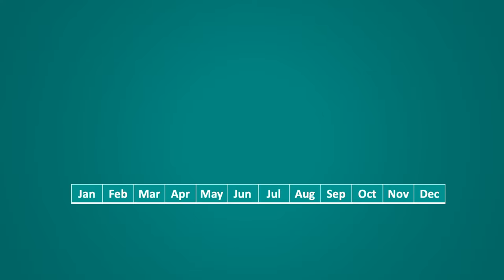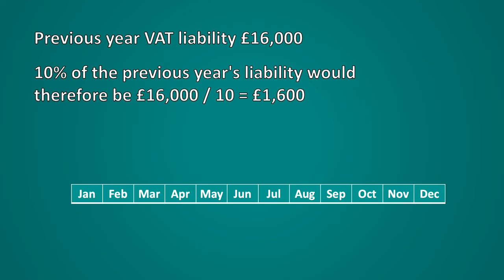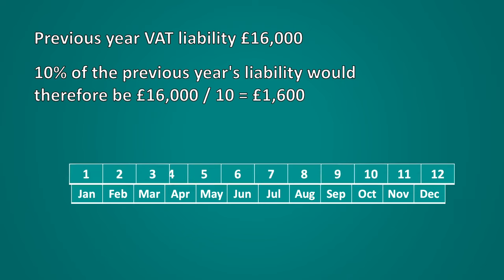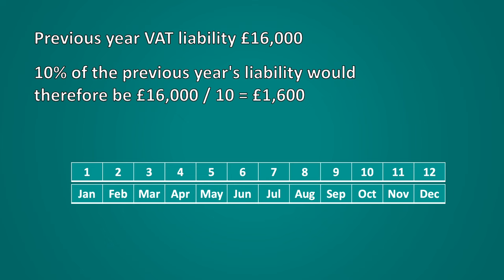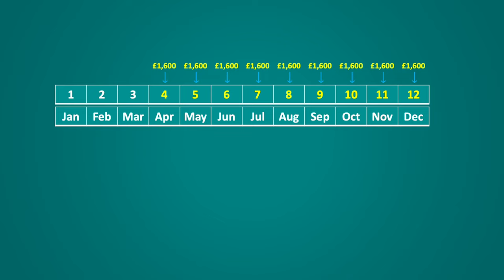Let's say that your financial year runs from January through to December and the previous year's VAT liability was £16,000. 10% of the liability would therefore be £1,600. Nine payments of £1,600 would be paid to HMRC from April, i.e. month 4, through to December being month 12. This would equate to the business paying £14,400 over a nine month period.